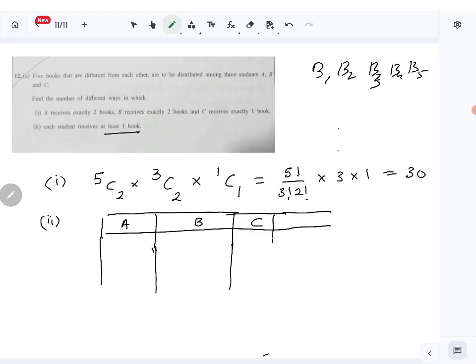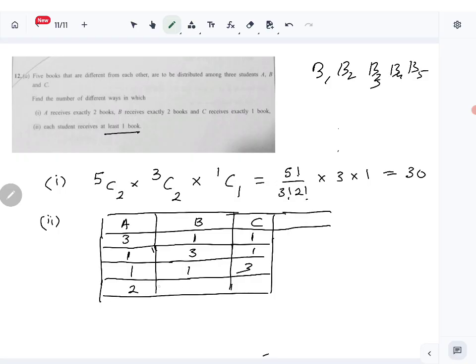So the first case is: A receives 3 books, B receives 1, C receives 1. Then B receives 3, the other two receive 1 each. Similarly, C receives 3, and the other two receive 1 book each.